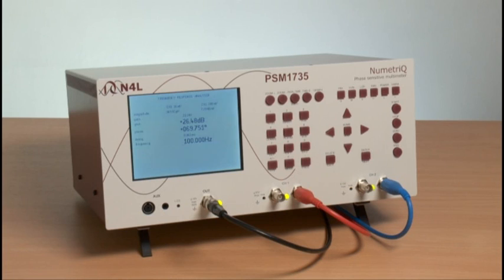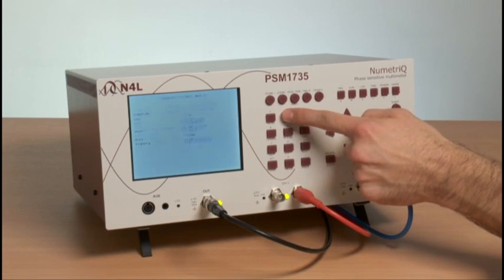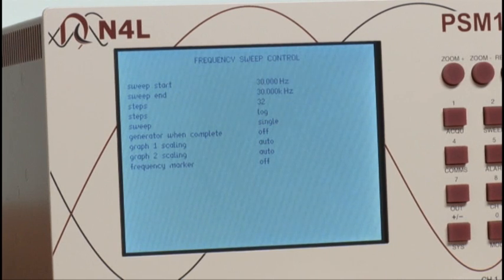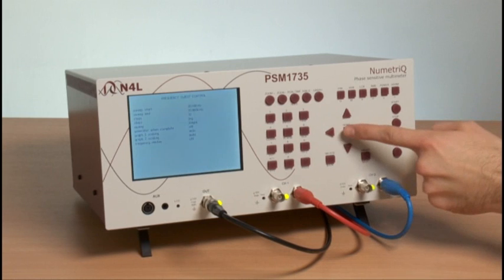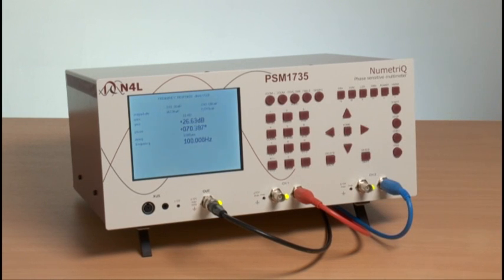Normally, loop response measurements are made over a frequency sweep, so we will go into the sweep menu, where we have preset a frequency range of 30 Hz to 30 kHz. This range can be set to any frequency from 10 microhertz to 1 MHz in the PSM 1700, or 10 microhertz to 35 MHz in the PSM 1735. We have selected 32 steps for the sweep, log plot, and a single sweep.